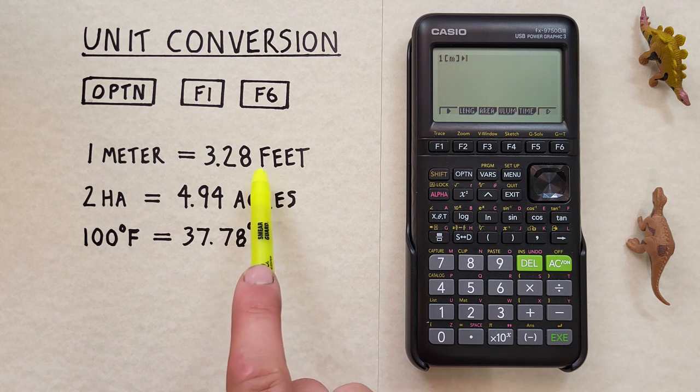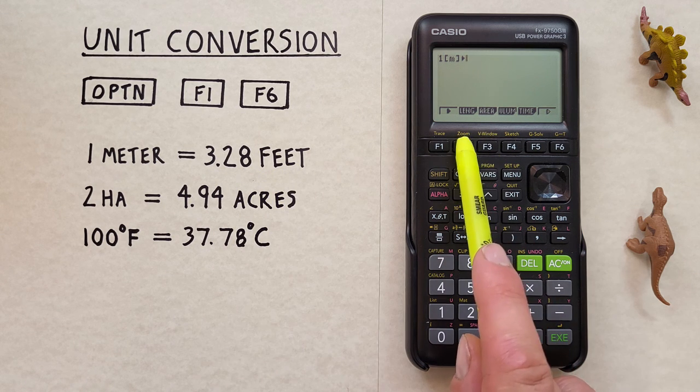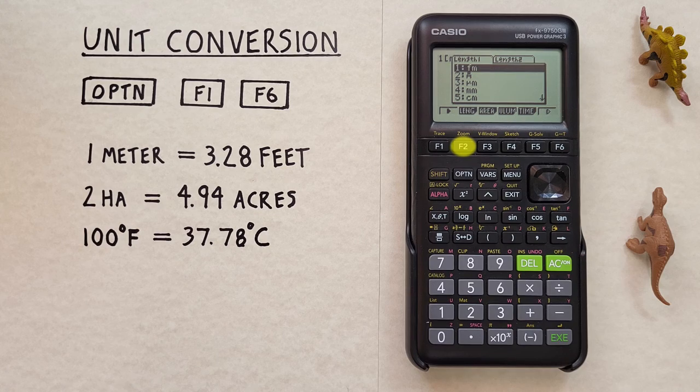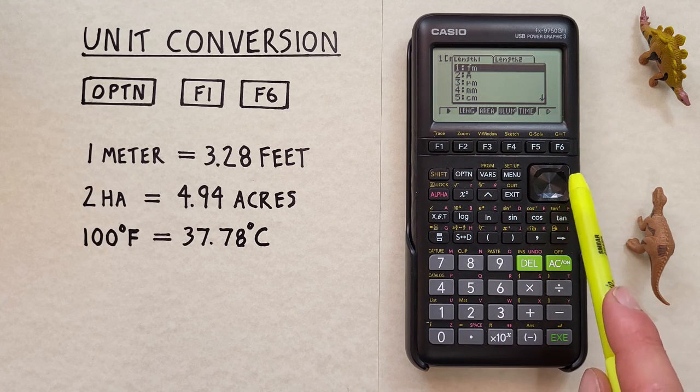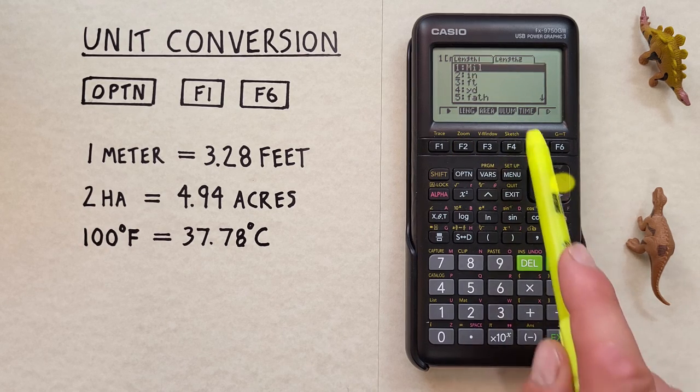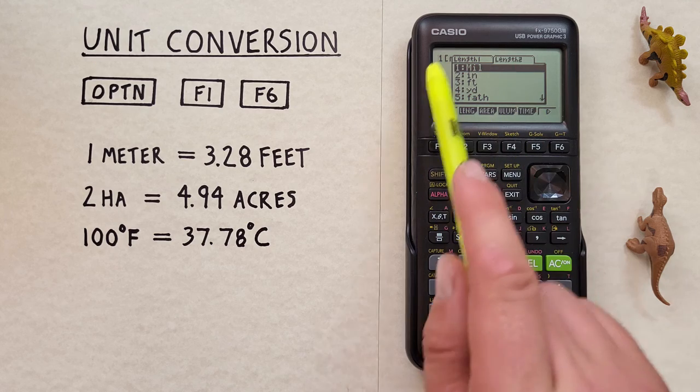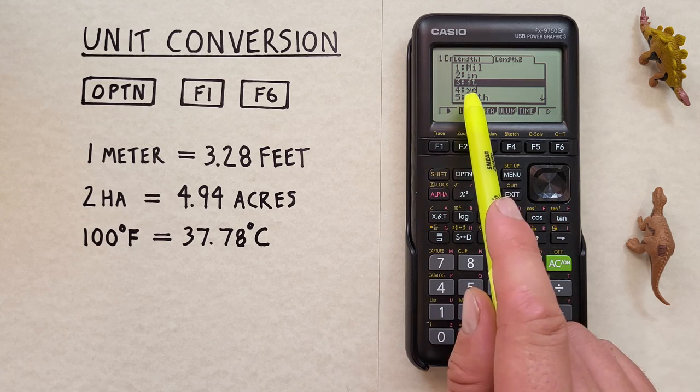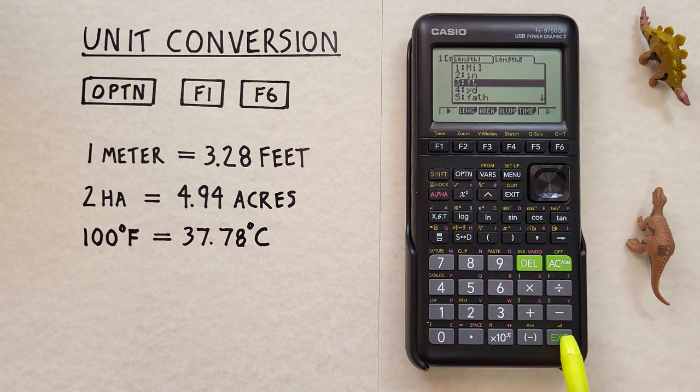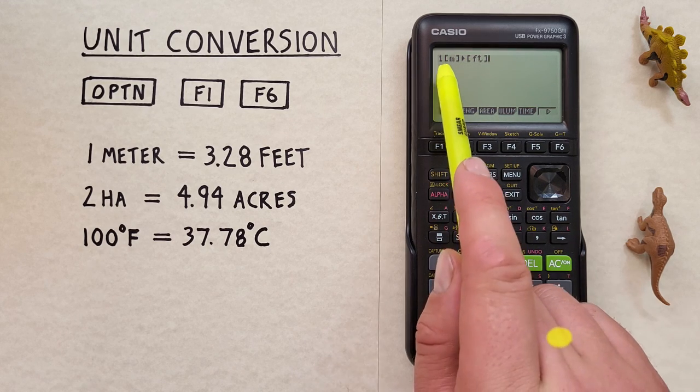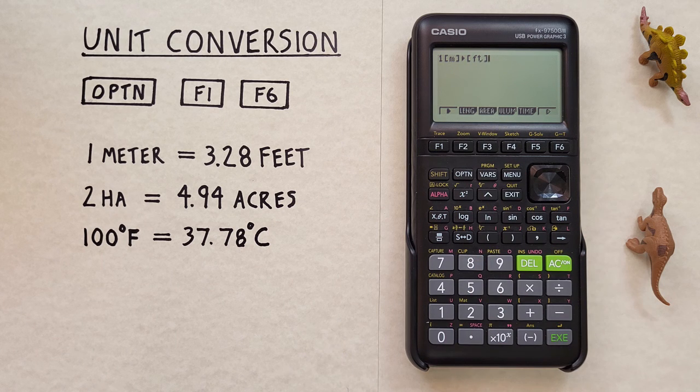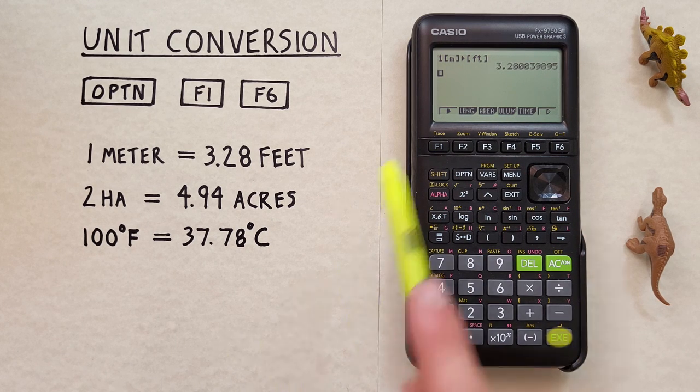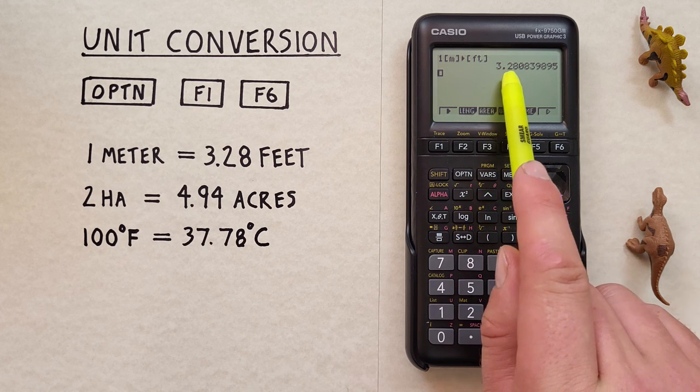Now we need to choose our other unit which is feet so we'll go back to length and we want to go to length two so we scroll one to the right and here we see our imperial lengths. Well if we scroll down to number three FT for feet and choose that one we see one meter into feet and if we hit EXE we see that one meter converts to a rounded 3.28 feet.